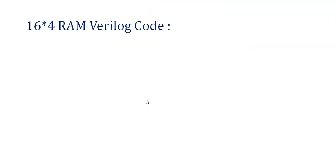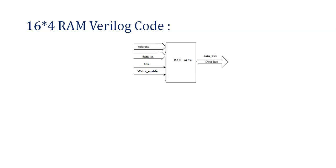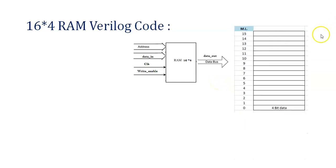Moving towards today's topic that is 16x4 RAM Verilog Code. RAM stands for Random Access Memory. Here we will be implementing 16x4 RAM, meaning we will be having 16 memory locations. Inside each memory location we will be able to store 4-bit data. The address is 4-bit because with 16 locations we need 4 bits to address them — 0000 for the 0th location, 0001 for the 1st location, and 1111 for the 15th location, giving us 0 to 15, totaling 16 locations.